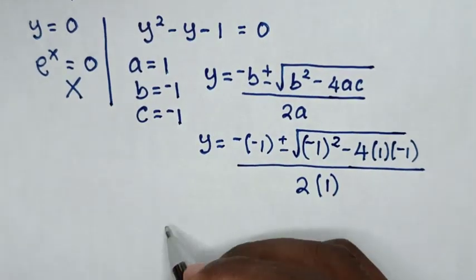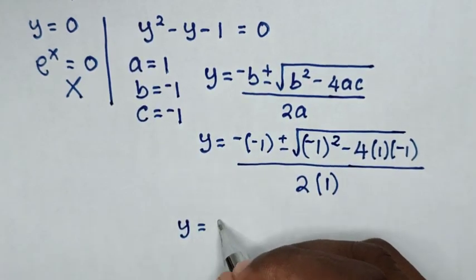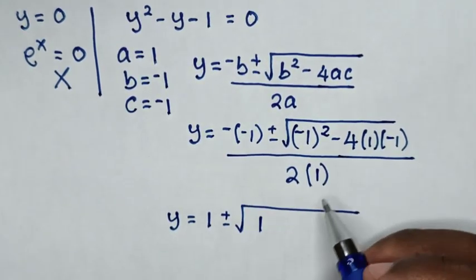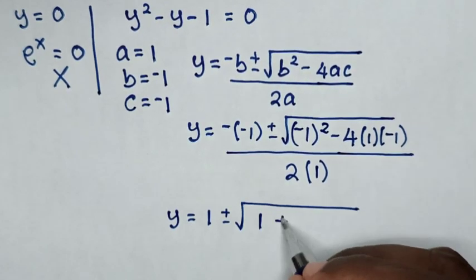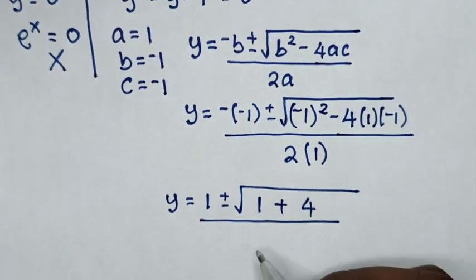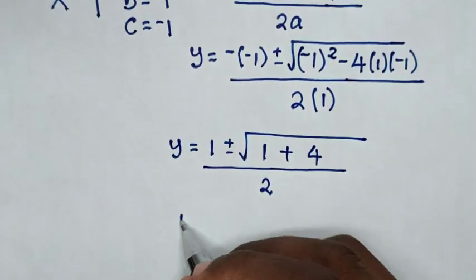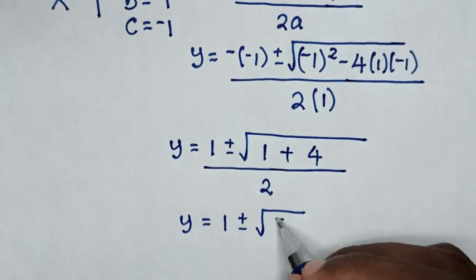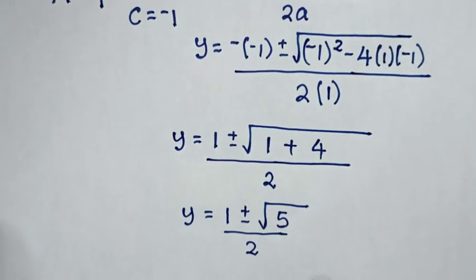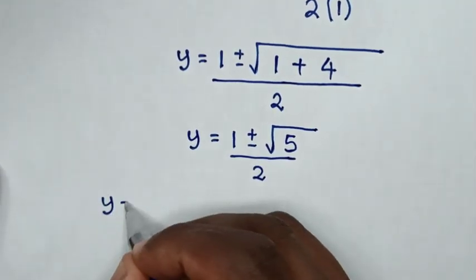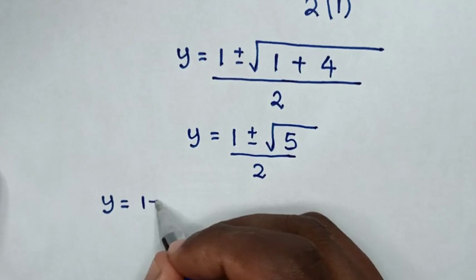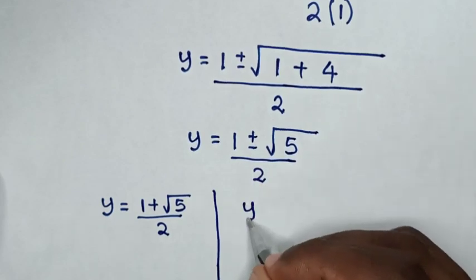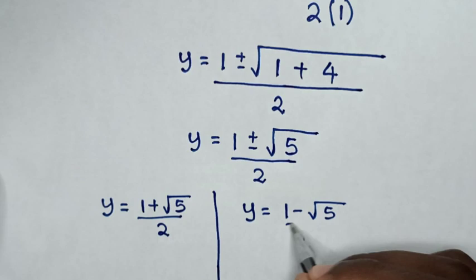Substituting the values: y equals negative of negative 1, which is positive 1, plus or minus square root of negative 1 squared (which is 1) minus 4 times 1 times negative 1 (which is positive 4), all over 2 times 1, which is 2. This simplifies to y equals 1 plus or minus square root of 5, all over 2. So we have y equals (1 plus square root of 5) over 2, or y equals (1 minus square root of 5) over 2.